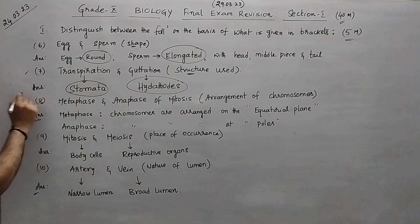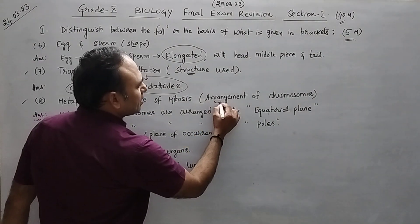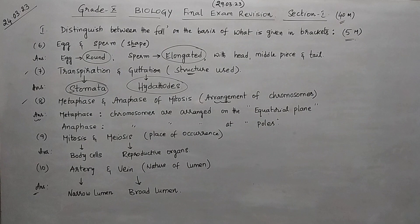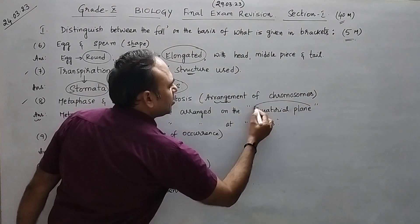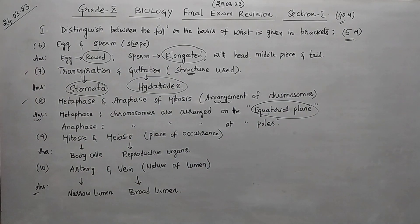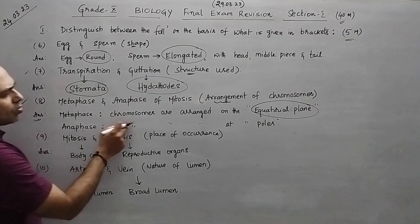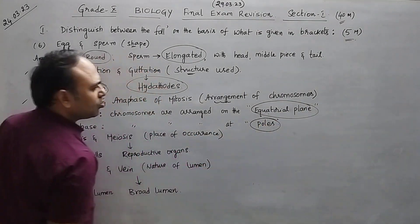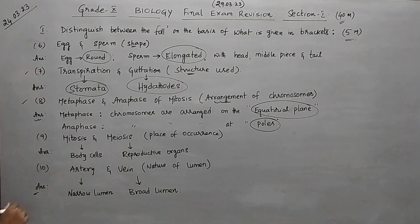Question number eight, metaphase and anaphase of mitosis - what will be the difference in arrangement of chromosomes? In metaphase, chromosomes are arranged on equatorial plane, and in anaphase, chromosomes are arranged at the poles. Remember the keywords.